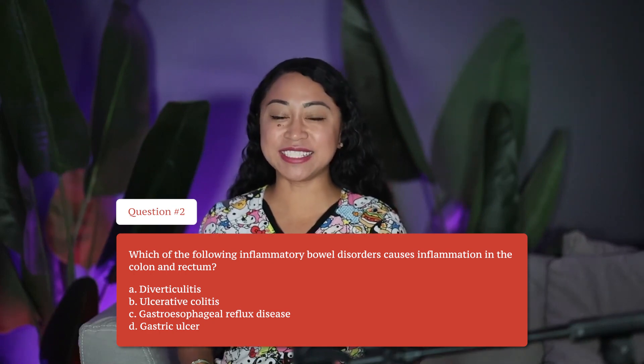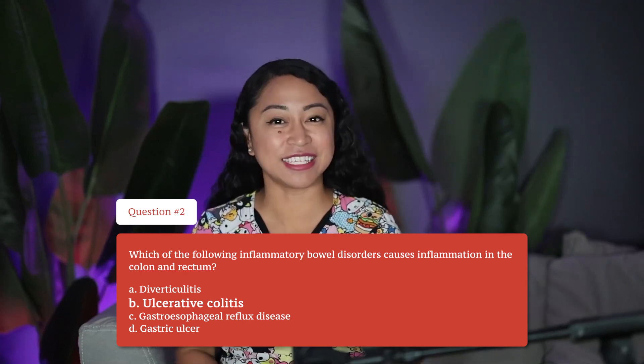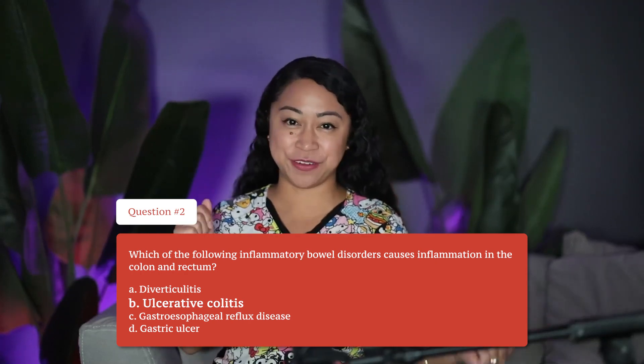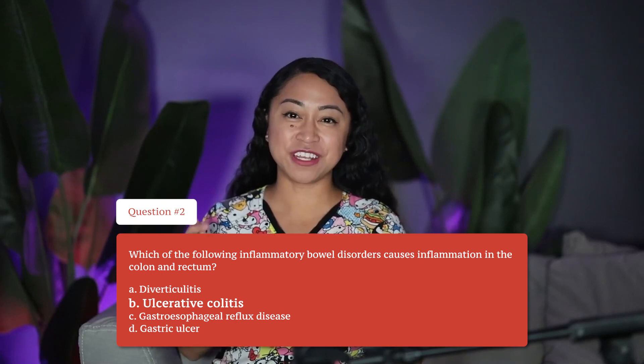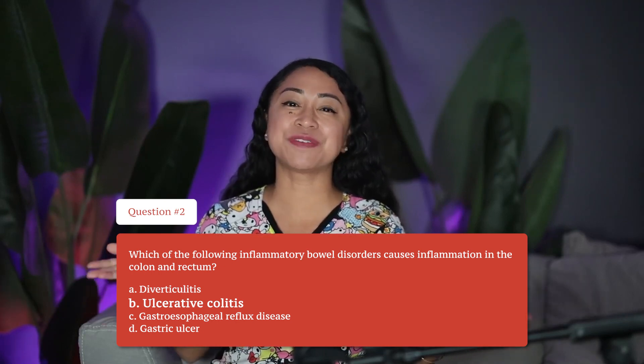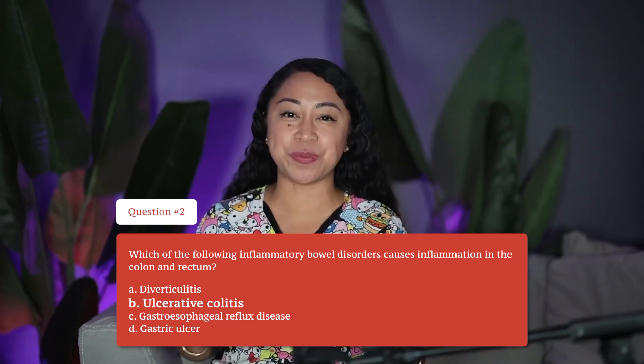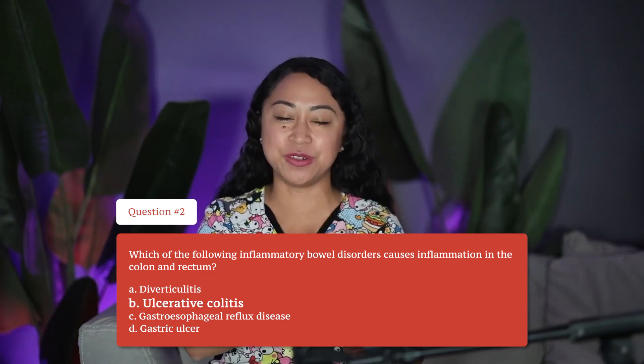The correct answer is B, ulcerative colitis. The rationale is that ulcerative colitis starts at the rectum and ascends towards the colon, causing inflammation. Systemic complications can occur, which contributes to the increasing mortality rate with ulcerative colitis. Rectal bleeding, blood and diarrhea, weight loss, and abdominal cramping are signs and symptoms seen in ulcerative colitis.